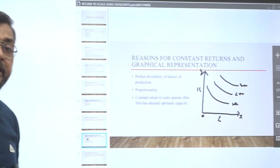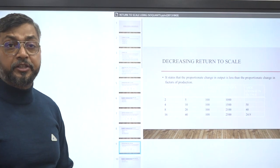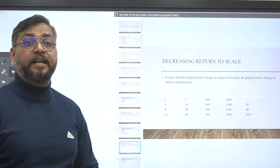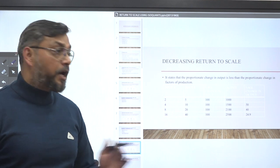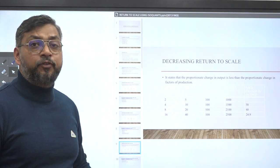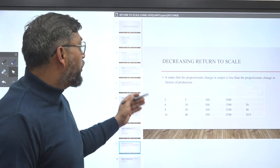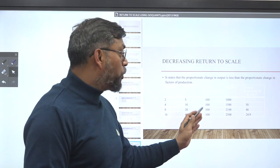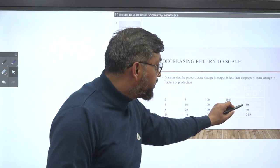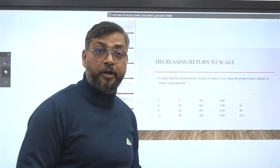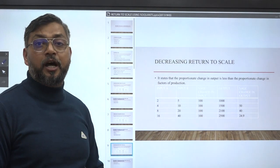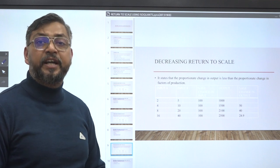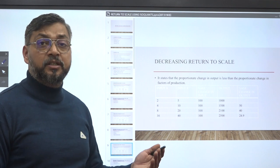Now let's look at decreasing returns to scale. Decreasing returns to scale states that the proportionate change in output is less than the proportionate change in factors of production. Looking at the table, the proportionate change in input is constant at 100%, but the resultant change in output is continuously decreasing and diminishing — initially 50%, then 40%, then 24.9%. Thus the proportionate change in output is less than the proportionate change in input.